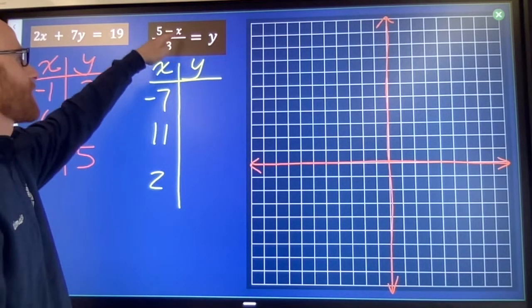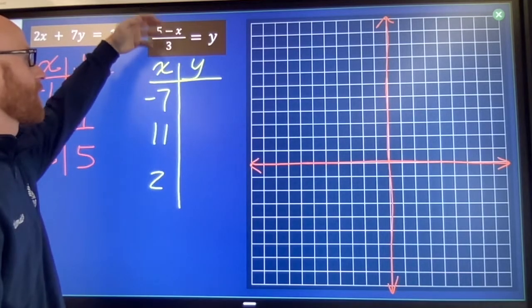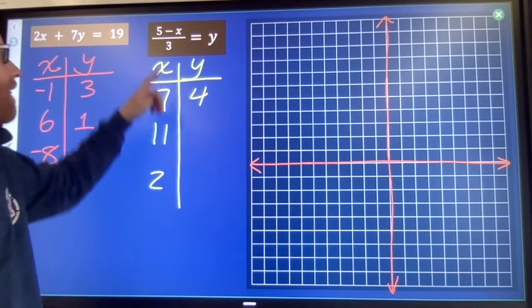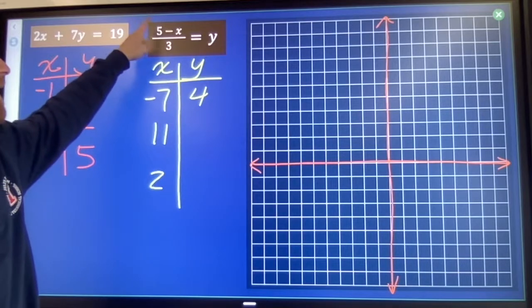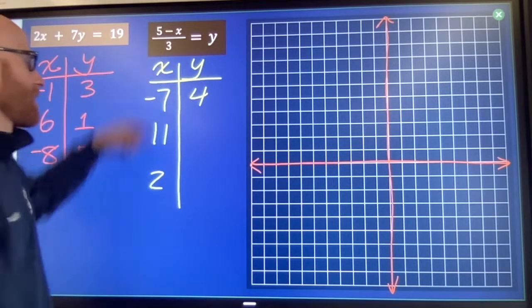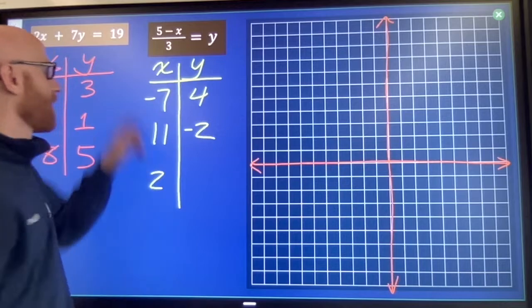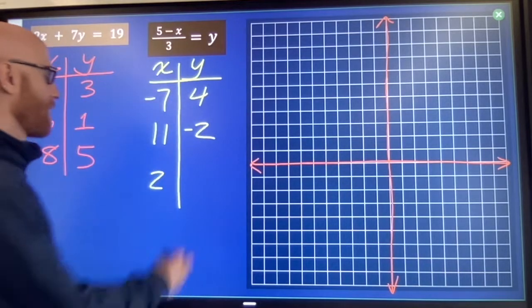5 minus negative 7 is 12, divide it by 3 is 4. 5 minus 11 is negative 6, divide it by 3 is negative 2. 5 minus 2 is 3, divide it by 3 is 1.